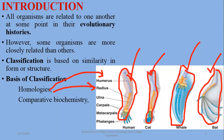The second basis of classification is comparative biochemistry. Biochemical molecules such as DNA, RNA, proteins, and nucleic acids can be used to classify organisms into common groups based on their similarities or differences.